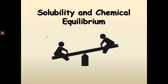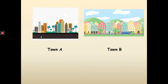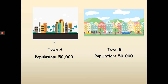What is a chemical equilibrium? I am going to use these examples to explain to you guys what chemical equilibrium is. Let's assume that there are two different towns, town A and town B. Town A has a population of 50,000 people, and town B also has a population of 50,000 people.